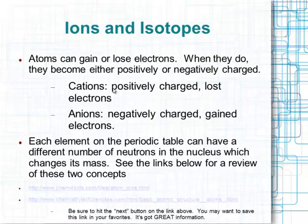Ions and isotopes. Atoms can gain or lose electrons — that's how we make ionic compounds — and when they do, they become positively or negatively charged. Cations are positive because they lost electrons. Anions are negative because they gained negatively charged electrons.